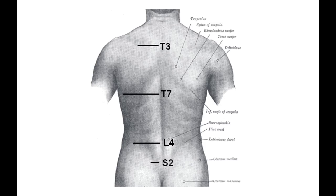Let's consider a bit of crucial surface anatomy. T3 is at the level of the medial part of the spine of the scapula. T7 is at the inferior angle of the scapula. L4 is at the highest point of the iliac crest. S2 is at the level of the posterior superior iliac spine. And remember that C7 is very easily localised as it's a prominence at the lower part of the neck.